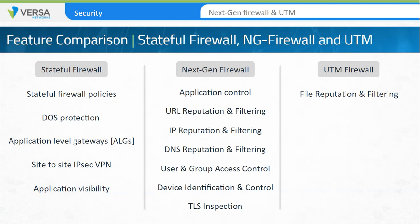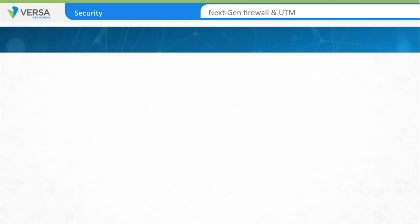This is the end of session 5 of the Versa Essentials series. In this session, we discussed access lists, the difference between stateless and stateful firewalls, next-generation firewall capabilities, and unified threat management. Thank you for your participation in this session, and we hope you found it informative. In the next session, we'll discuss WAN implementations.